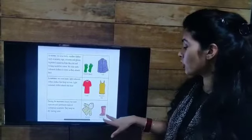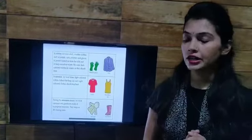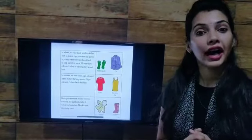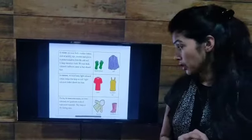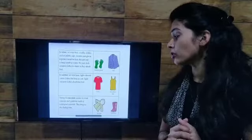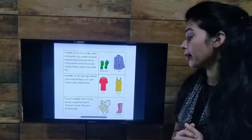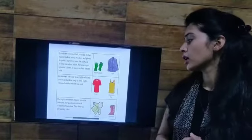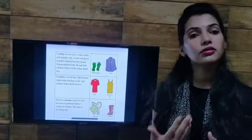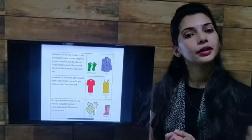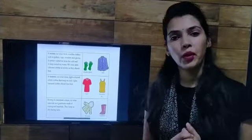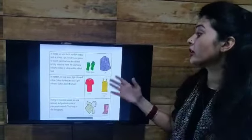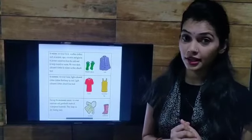Next is the raincoat and gumboots. We wear a raincoat and gumboots during the monsoon season. They are made of waterproof material. We wear a raincoat in the monsoon season to protect us from getting wet. These are examples of different clothes we wear in different seasons.